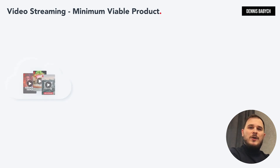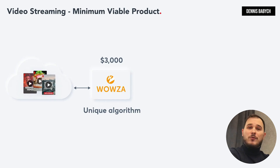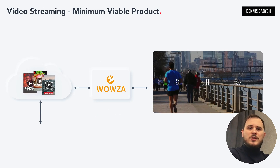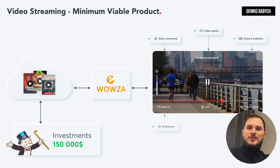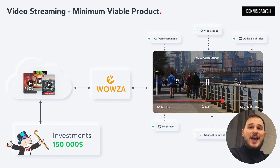Your objective is to identify the key features and essential functionality for your MVP and release your product quickly. We once created a video streaming platform with a $3,000 budget and minimum UI using a third-party video streaming software provider. Our client showed the product to users, received positive feedback, and raised $150,000 within a month. Identify the essentials and create an MVP quickly — the market is not waiting. If you hesitate, your competitors may execute their plans and leave you behind.